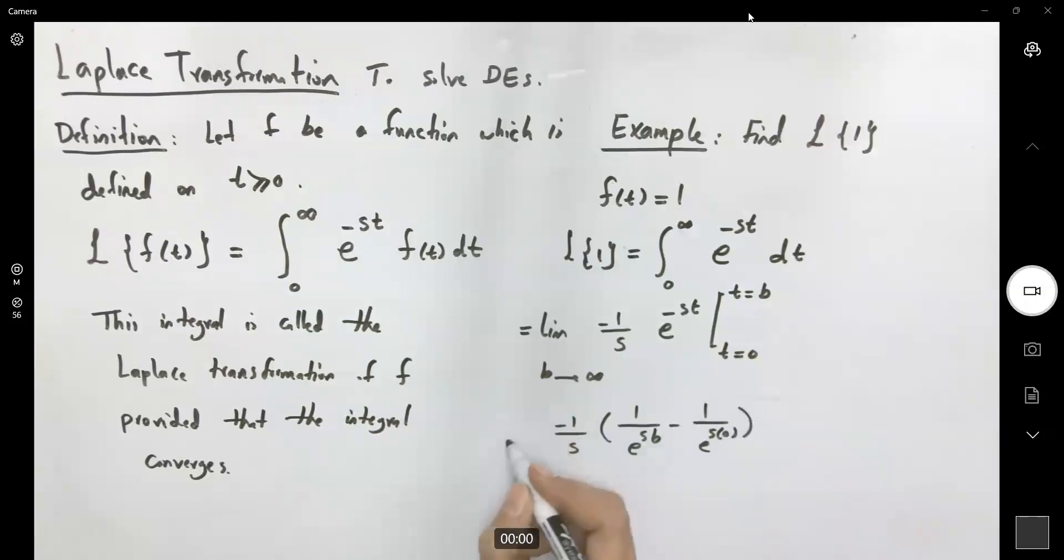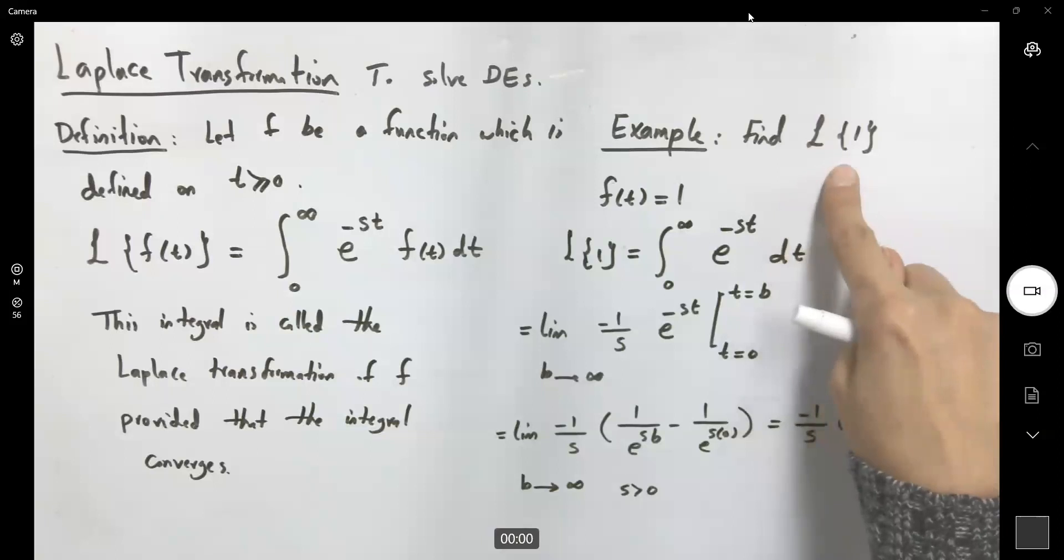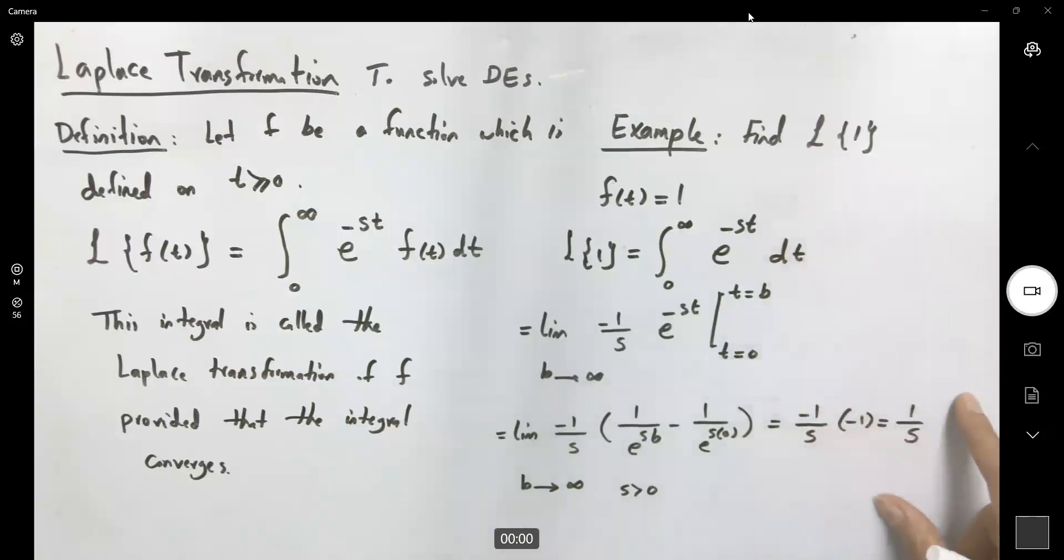Then taking the limit as b goes to infinity, one over infinity. Well, this is going to be zero given that s is positive. So this becomes negative one over s times negative one or just one over s. So the Laplacian of constant function one is one over s with the condition that s is positive. Note that if s is negative, then the integral diverges.